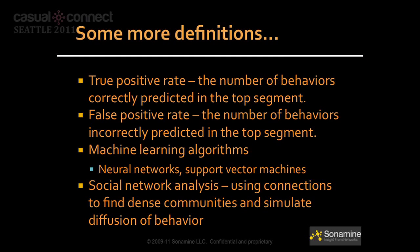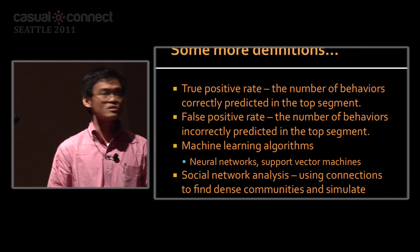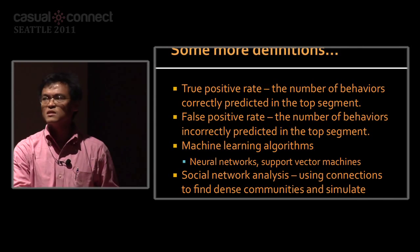Some definitions: True positive rate means you predicted it would convert and you got it right. False positive rate means you predicted conversion but the person did not convert. Machine learning algorithms — neural networks, support vector machines — is the math behind the scenes. Social network analysis is important: you look at connections between your players, find dense communities, and simulate diffusion. Obesity, happiness, and smoking are contagious — and we've verified that people paying money for games is also contagious in our case studies.